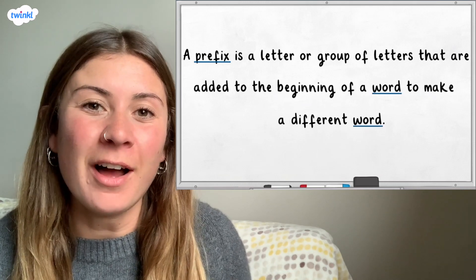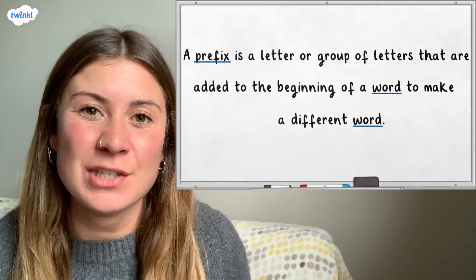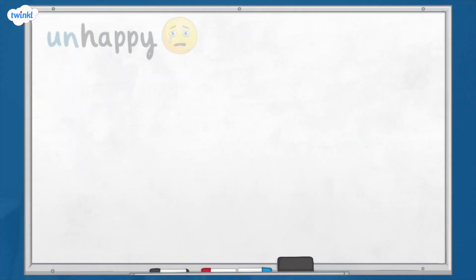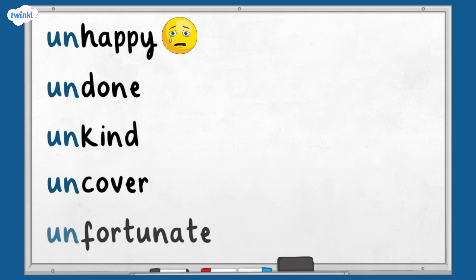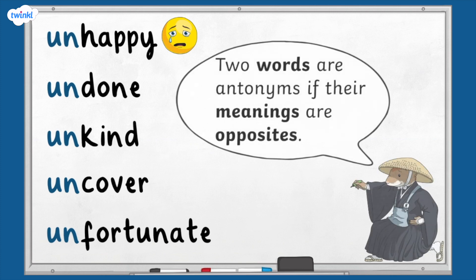For example, un can be added to happy, done, kind, cover and fortunate to reverse their meanings. Adding un creates the antonym of the root words. Two words are antonyms if their meanings are opposites.